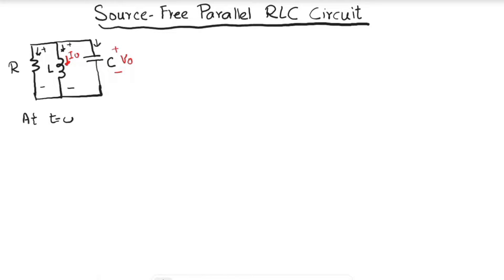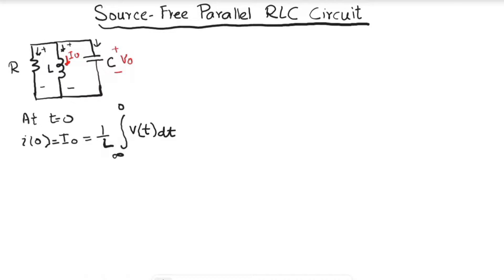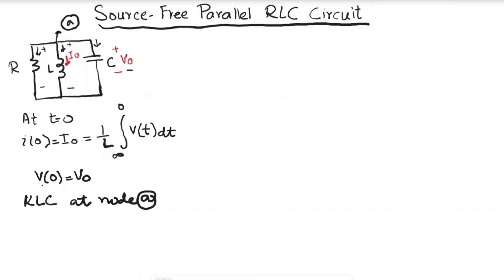At t = 0, the initial inductor current i(0) equals I_0, which is (1/L) times the integral from negative infinity to zero of v(t) dt, since the inductor does not change its current abruptly. The initial capacitor voltage v(0) is equal to V_0.